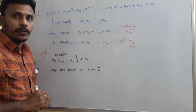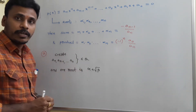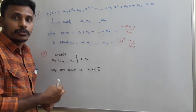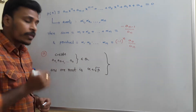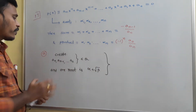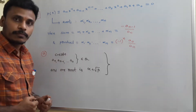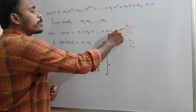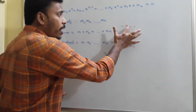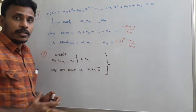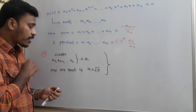Since all these coefficients are rational, the sum of the roots is -aₙ₋₁/aₙ. Since aₙ₋₁ and aₙ are both rational, the sum of the roots is clearly rational. Since the sum of the roots is rational, I am going to analyze the remaining roots.